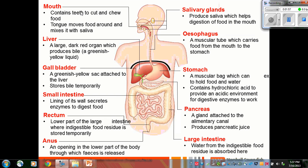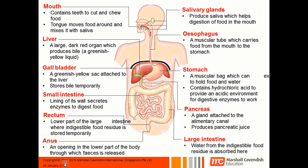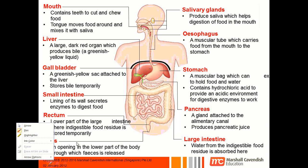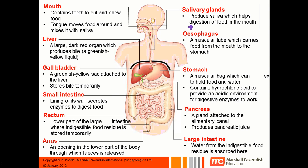We have the mouth, the salivary glands — which is the cauliflower-looking thing over here — the oesophagus, also known as the gullet. Then we have the big red thing in the background, which is the liver, and the small green thing, which is the gallbladder.